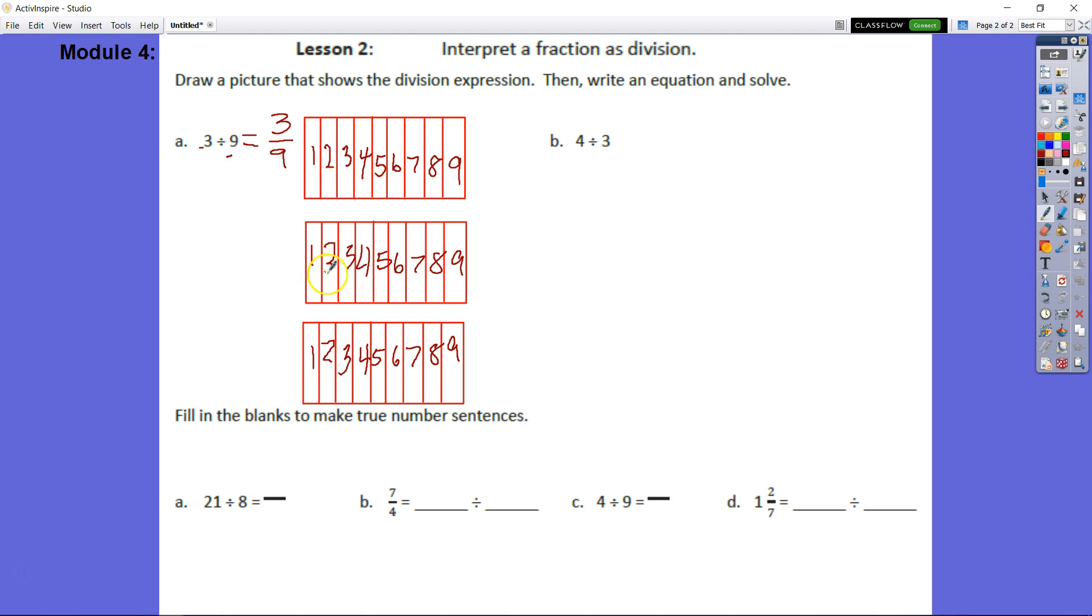If we counted up all of these, 9 times 3, we know it's 27. So we could also say 27 of the ninths divided by 9 equals 3 ninths apiece.